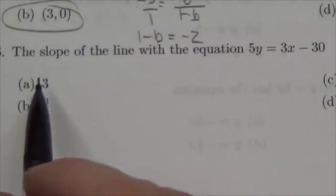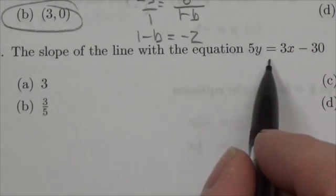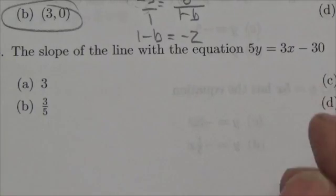Hi, everyone. This question tells us that the slope of the line with the equation 5y equals 3x minus 30 is what?